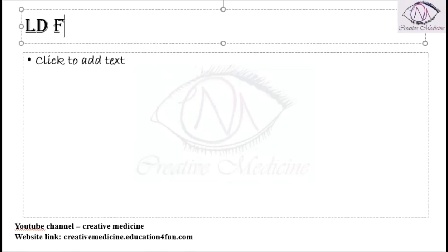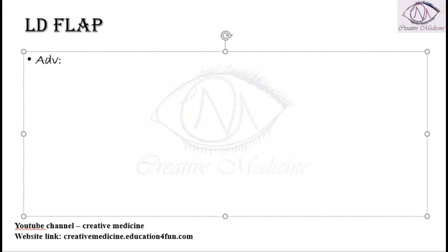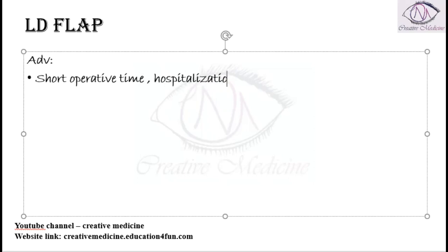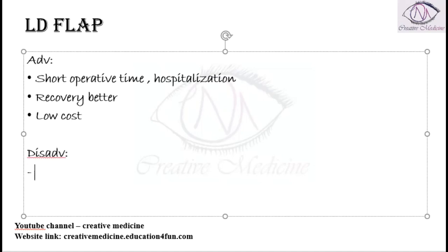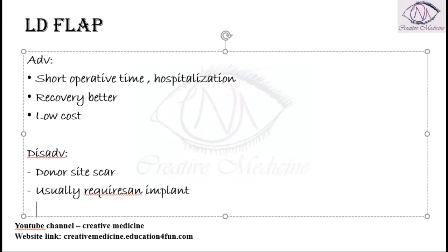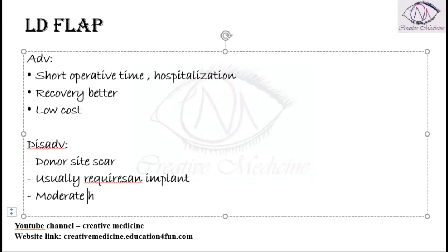Next is the latissimus dorsi flap. The advantages of using this flap include short operating time, short hospitalization, better recovery, and low cost. The main disadvantage is that we are taking the latissimus dorsi muscle from the body itself, so there will be a donor site scar, and it usually also requires an implant. In some cases there can be moderate hospitalization and recovery.